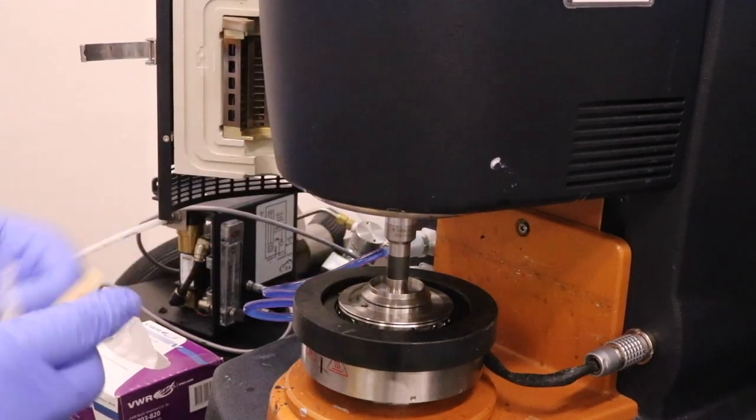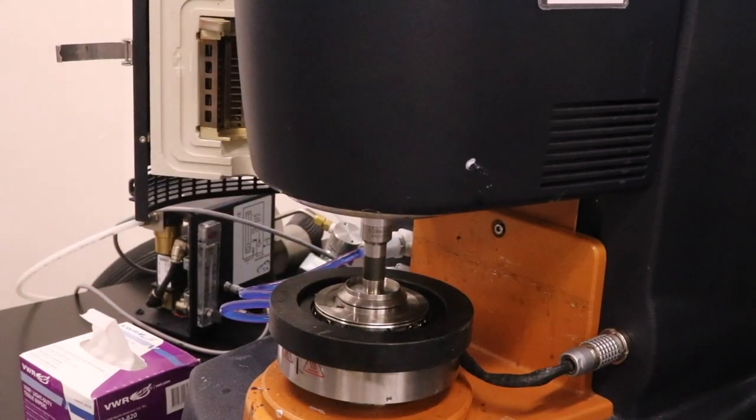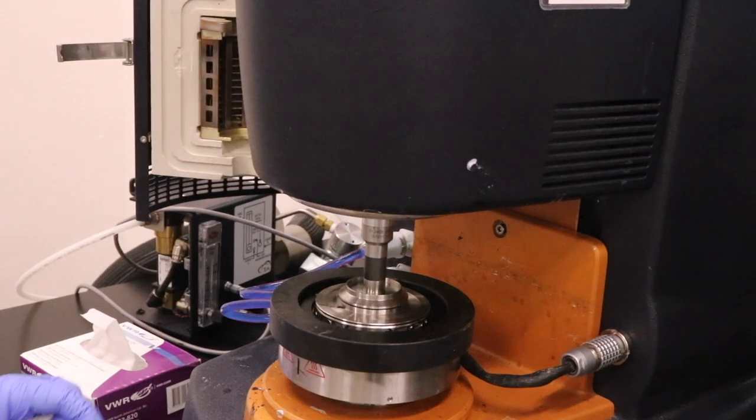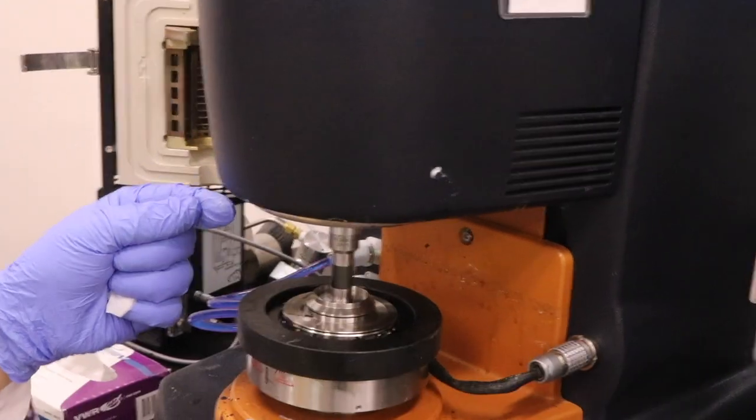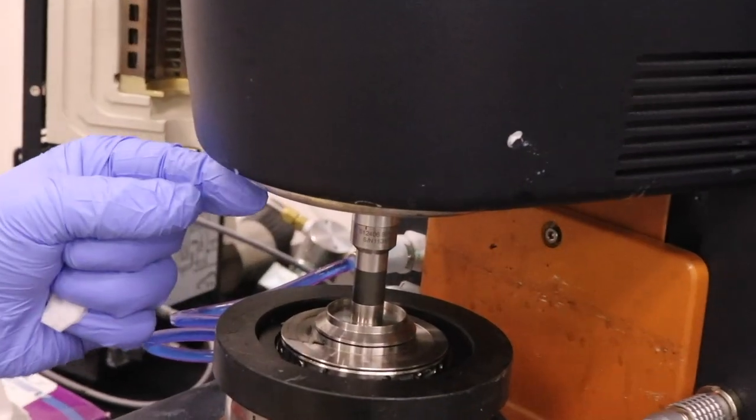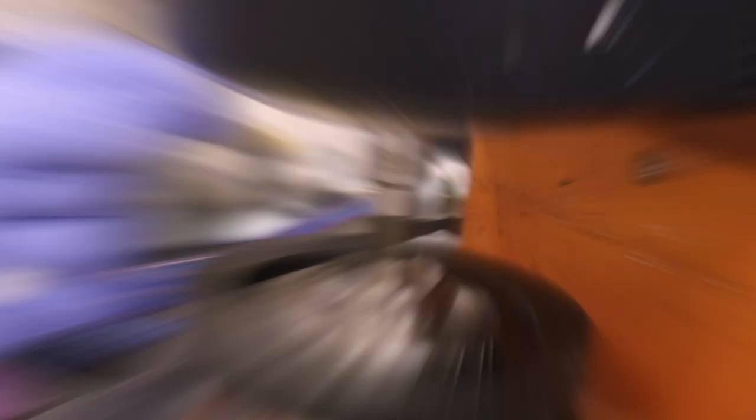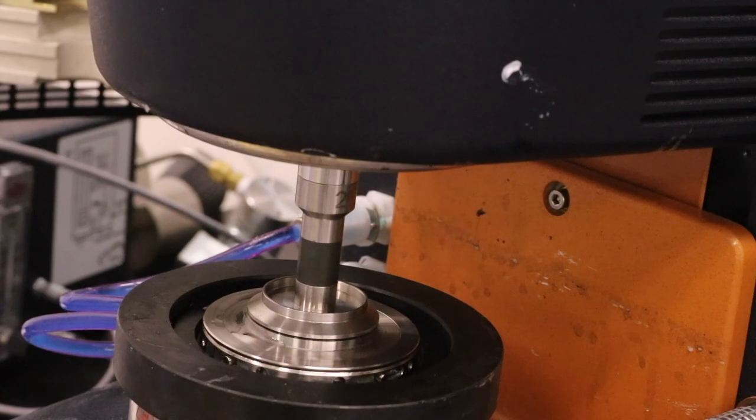So now we can start the test. And as you can see here, the top plate will rotate from a small shear rate from about 0.1 to 1,000.